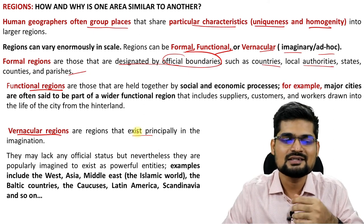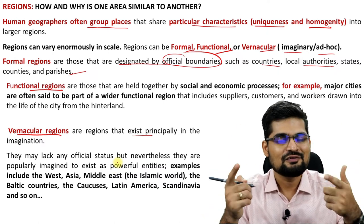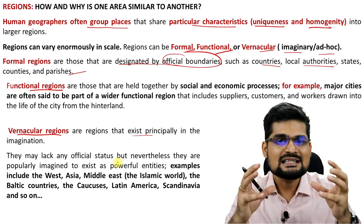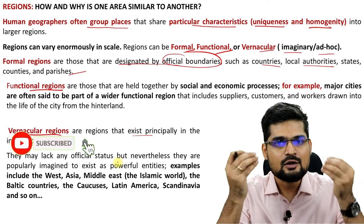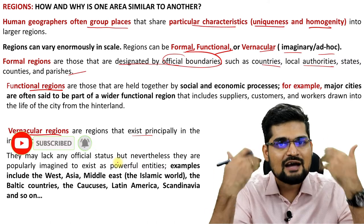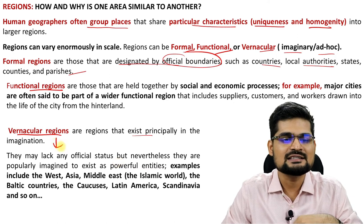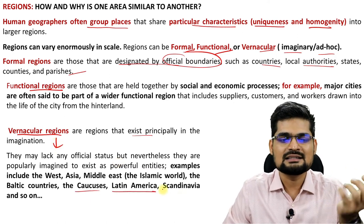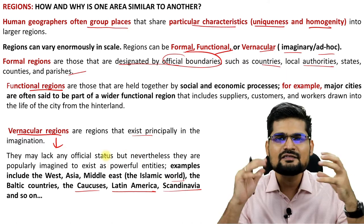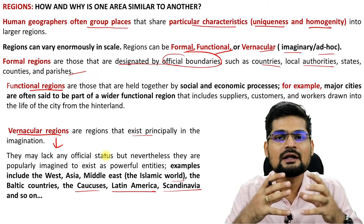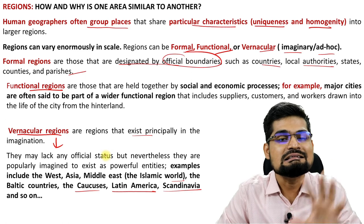These are vernacular or imaginary regions — Caucasians, Latin Americans, Scandinavians, Baltic states, Islamic world, Middle East — several connotations, all dependent upon what attributes we give to those spaces. That's the concept of region. So these are the five common attributes of human geography — location, place, human-environment interaction, movement, and region — that sum up the entire content of human geography.